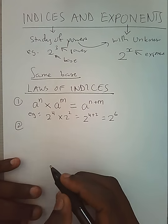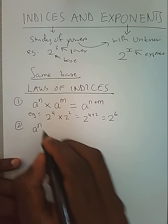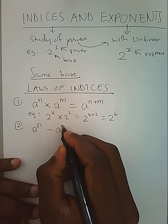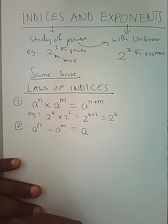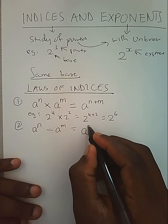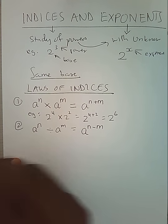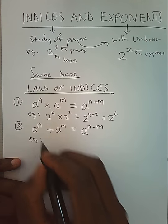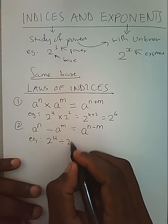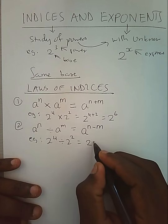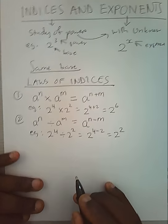Another rule is division. In this case, having the same base, we shall subtract the powers. For example, 2 power 4 divided by 2 power 2 will be 2 power 4 minus 2, giving us 2 power 2.